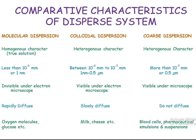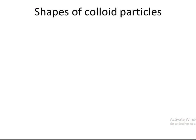Examples of these dispersion systems: for molecular dispersion, oxygen molecules and glucose are good examples. For colloidal dispersion, milk and cheese are very good examples. For coarse dispersion, blood cells, pharmaceutical emulsions, and suspensions — which are easily separable and visible under a microscope — are examples.